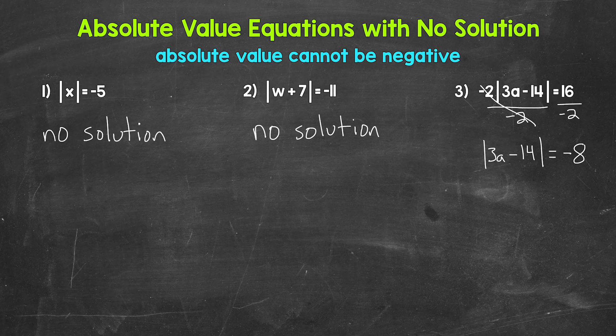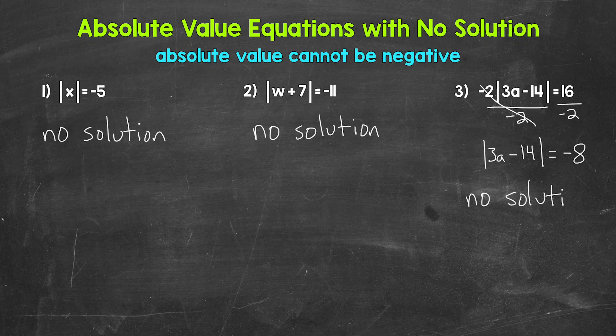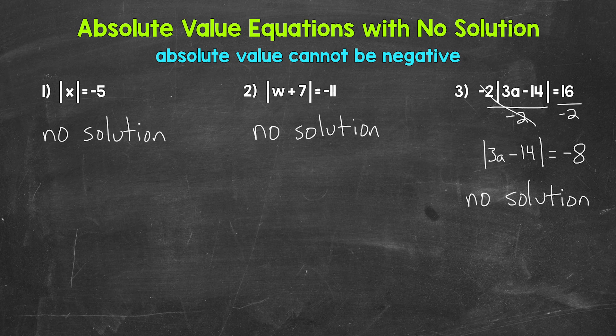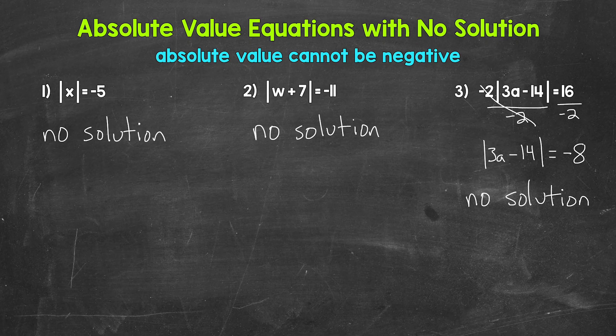We have our absolute value isolated now, but it equals a negative. So this is going to be no solution as well. So there you have it. There are some examples of absolute value equations with no solution. Just remember, if we have an absolute value equation with the absolute value equal to a negative, then we have no solution.